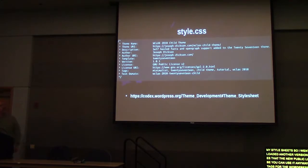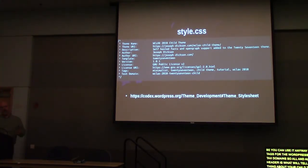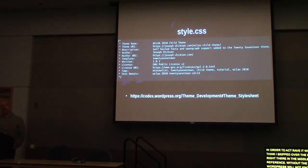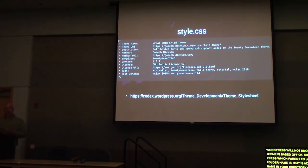The most important part is the template reference right in the middle of the comment block. Without the template reference, WordPress will not know what your child theme is based off of. That tells WordPress which parent to look from, and that value is the actual folder name of the parent theme in your directory. You don't have to use a pre-developed parent theme — you could use child themes for your own projects. If you've created your own theme and need a separate version for a custom homepage, you can do that as a child theme and still benefit from your previous work.